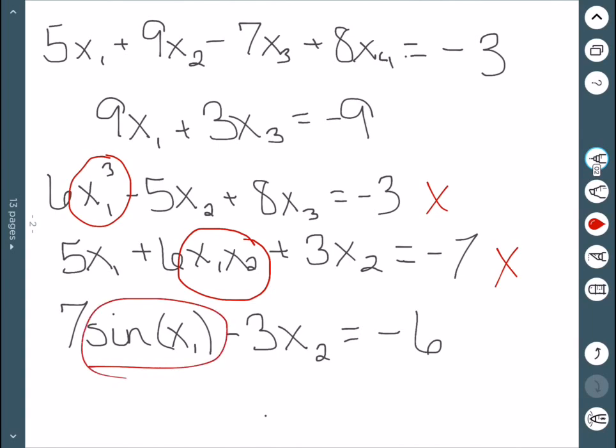And then the last one has this sine of x1, which is bad. We don't want a variable inside of a function.